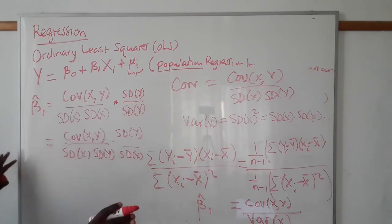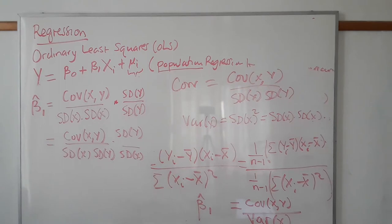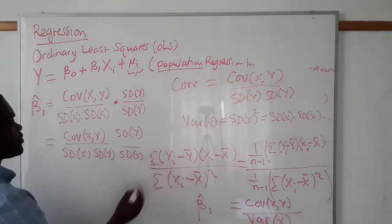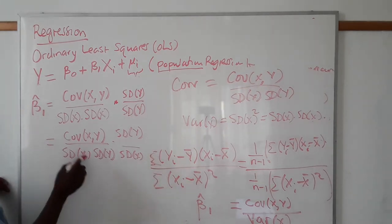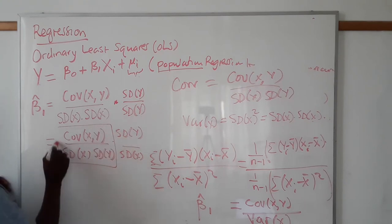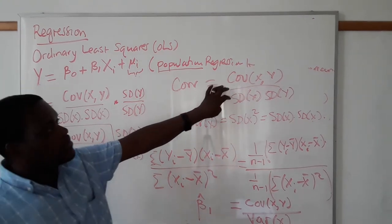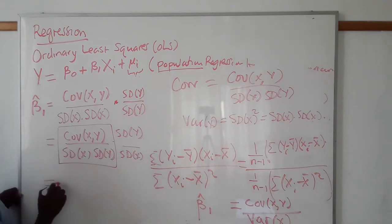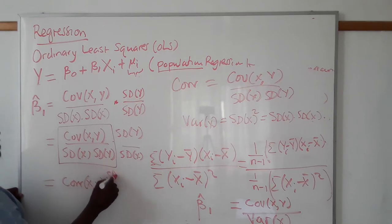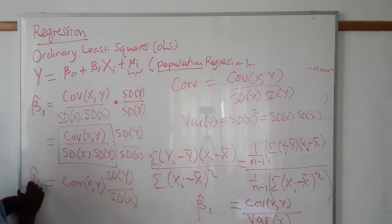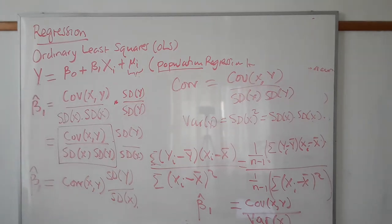SD(X). So I haven't changed anything, I simply reordered them in terms of which one do I write first. The value that I get doesn't change. Okay, so now you can see that this part here is your correlation. Right? So then it means this is correlation of X, Y times standard deviation of Y over standard deviation of X. This is another way of finding my β₁.